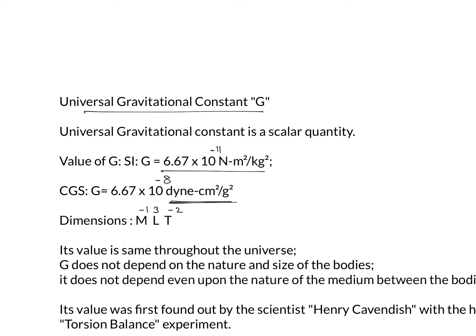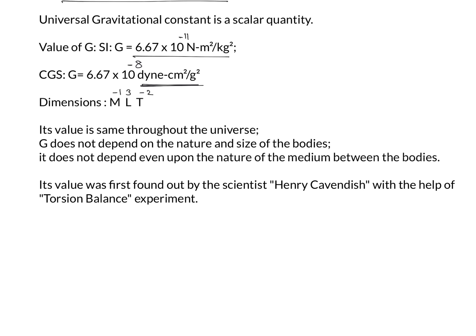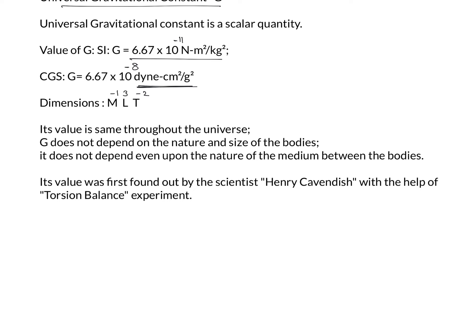The value of G is a universal constant — it is the same at every point in the universe. It does not depend on the nature or size of bodies, and it does not depend on the medium between the bodies. So whether two masses are in air or in water, the force of attraction remains the same if mass and distance are the same. The value of G was first determined by scientist Cavendish using a torsional balance experiment.